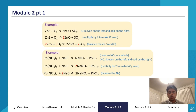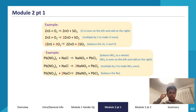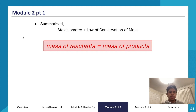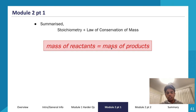Balancing chemical equations does look tedious, but as you repeat it over and over again it becomes second nature. At this point we've summarized stoichiometry and the law of conservation of mass — that the mass of reactants equals the mass of products — and from that we've branched into balancing chemical equations, looking at coefficients to make sure they're the same on both sides.